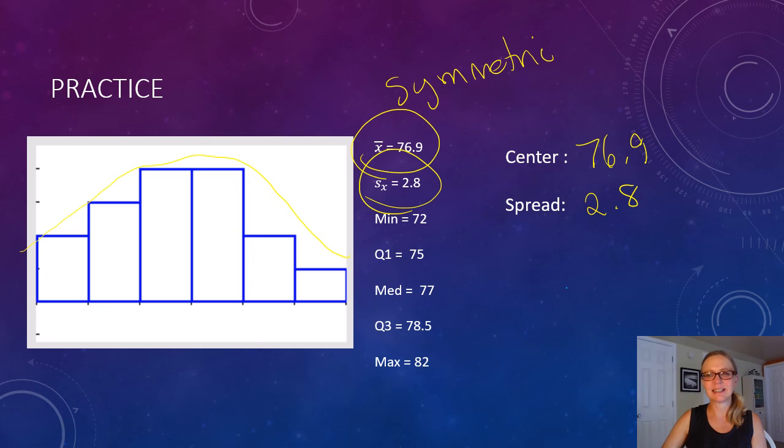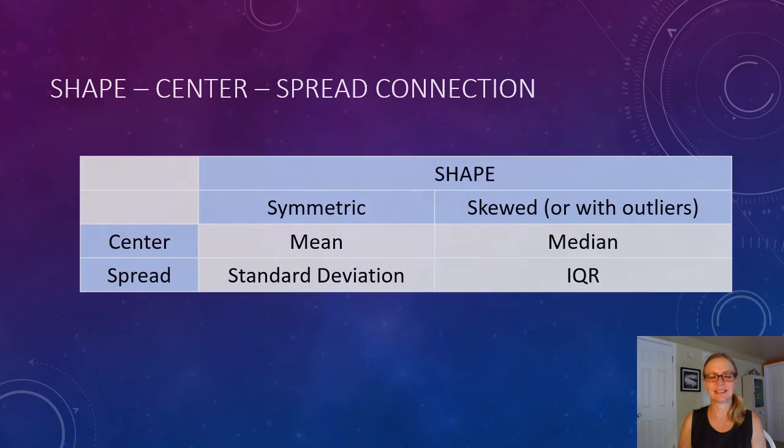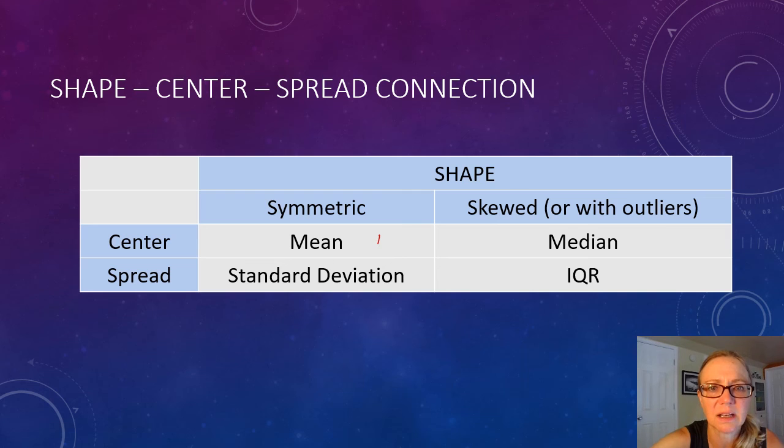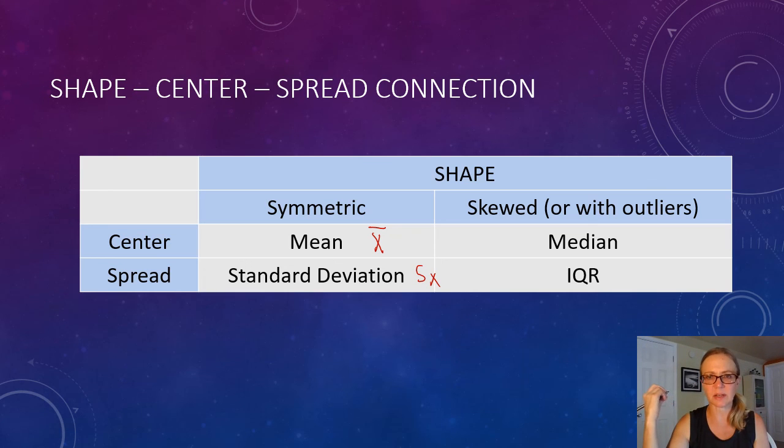Thank you for watching. All right, to recap what we've just seen in examples, there is a connection between the shape of the distribution and what we use for center and what we use for spread. When the shape of the distribution is symmetric, for center, we use the mean, which is given by X-bar on the calculator, and we use the standard deviation for spread, and that's given by S sub X on the calculator.